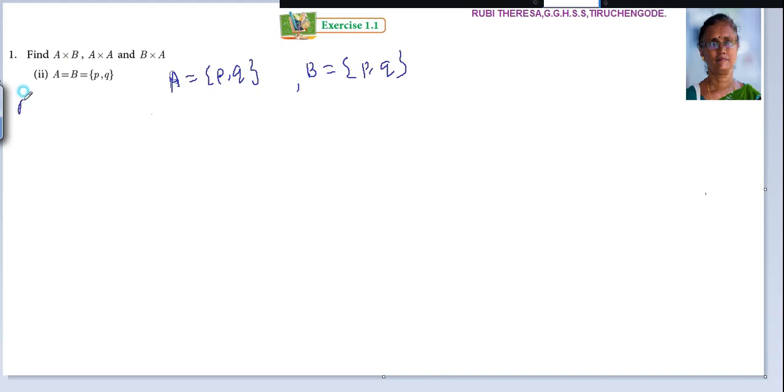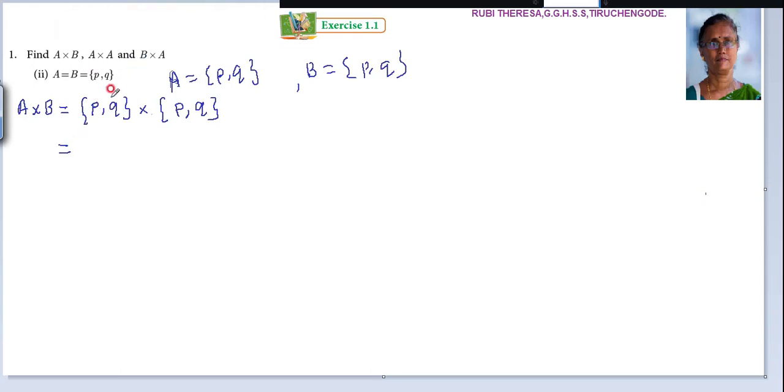First, they're asking for A cross B. In place of A, write {P, Q}, and in place of B, also write {P, Q}. Now you're going to pair these elements. While pairing, there are two ways. Let me show the first method.